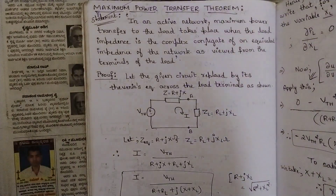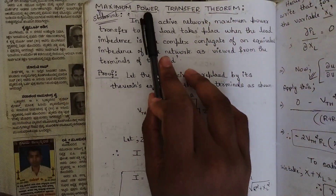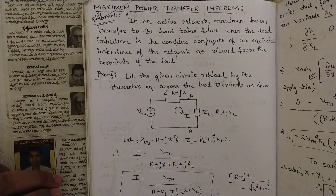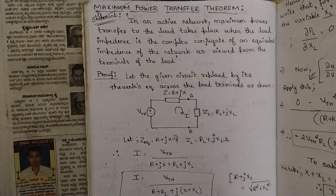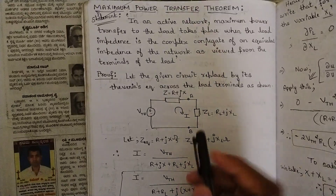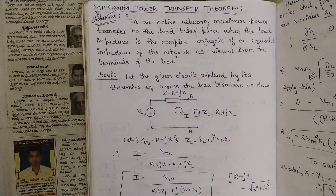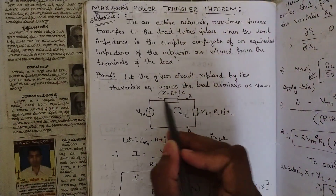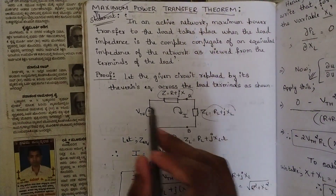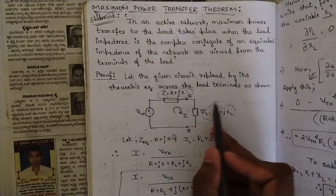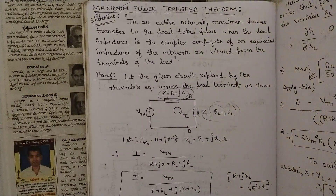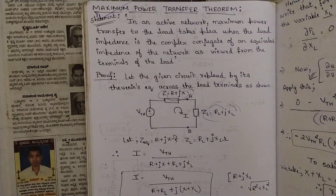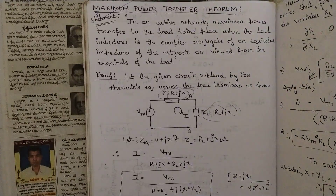Let us start with this theorem. The name of the theorem is Maximum Power Transfer Theorem. The name itself says that power is transferred in the circuit. We will be having one simple or one complex circuit. For the proof part, they have considered one complex-valued circuit where two impedances have complex values, because the proof part consists of complex terms. That's why it is very critical and difficult, but I have written all the steps in a detailed way.